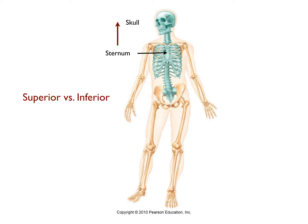Notice that on your handout, in parentheses next to the term superior is the term cranial, and next to the term inferior is the term caudal. Each of these additional terms is included because they can be used interchangeably with the terms superior and inferior. So in our previous example, we said the skull is superior to the sternum. However, we could also say that the skull is cranial to the sternum, or that the sternum is caudal to the skull.